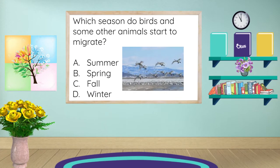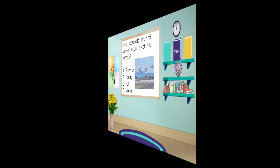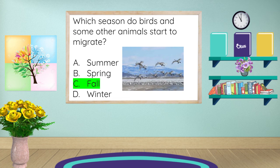Which season do birds and some other animals start to migrate? Is it A, summer; B, spring; C, fall; or D, winter? Fall it is. Yes, it's during the fall when the summer temperatures begin to drop and it starts to get cooler. The birds begin to migrate — they go south to warmer places. Great job.